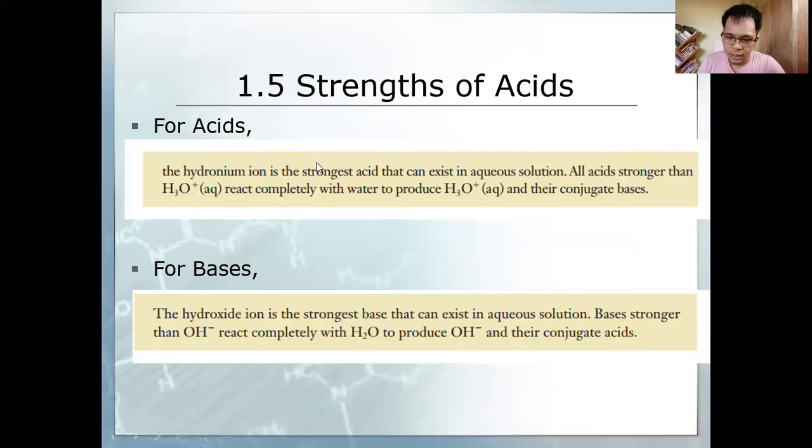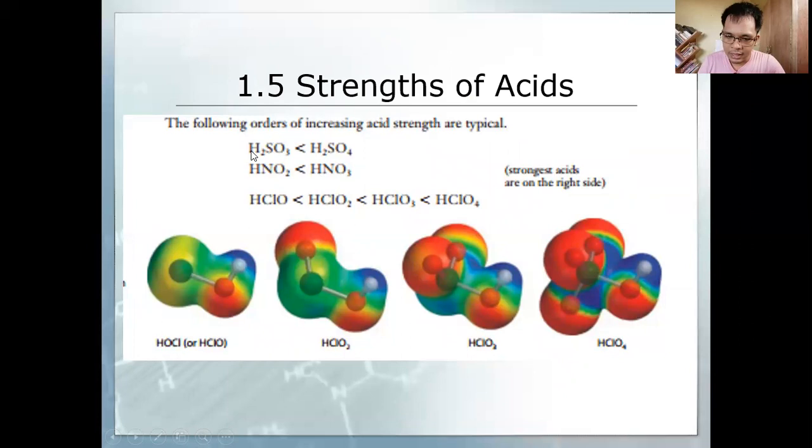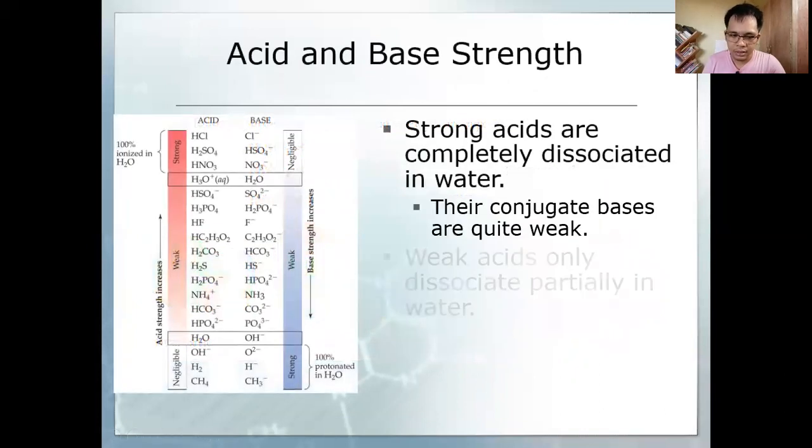Strength of acids. Hydronium ion is the strongest acid that can exist in aqueous solution. For bases, hydroxide ion is the strongest base that can exist in aqueous solution. Based from this, I will explain this simply: the more oxygen atoms, as we can see here, the greater its acid strength. Consider H2SO3 and H2SO4, sulfuric acid and sulfurous acid. Sulfuric acid is a stronger acid than sulfurous acid because it contains more oxygen atoms. Same with nitrous acid and nitric acid. Nitric acid is stronger than nitrous acid because it contains more oxygen atoms.